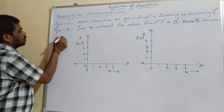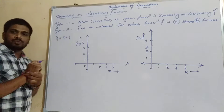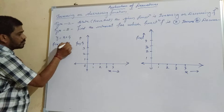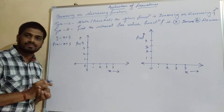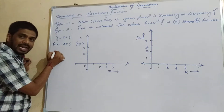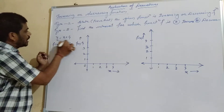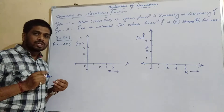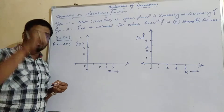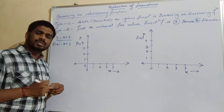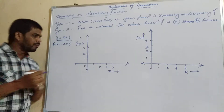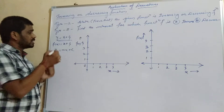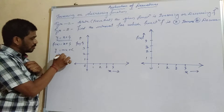It is given that y is equal to x plus 4, so f of x is equal to x plus 4. We know that the equation of a straight line is a linear equation, and the graph of a linear equation will always be a straight line. The equation of a straight line is y = mx + c. So here m is equal to 1.